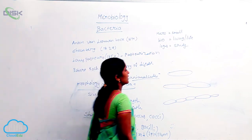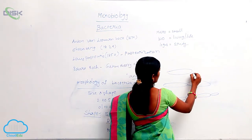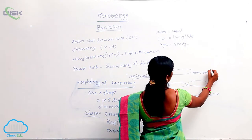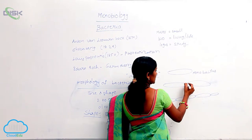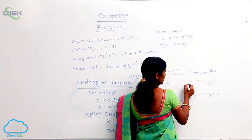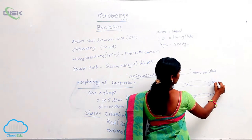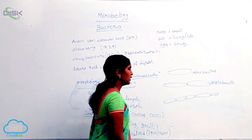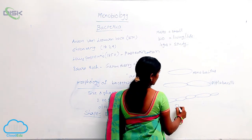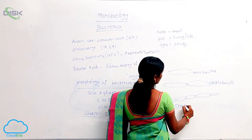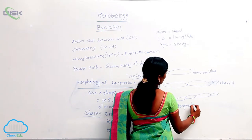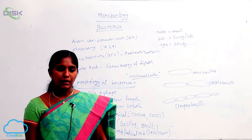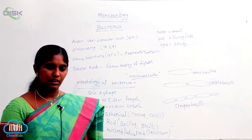The bacillus forms, if they are singular, they are called monobacillus. If two bacillus individuals are present, they are diplobacilli, and many in number means it is streptobacilli. Like bacillus forms, different bacillus forms are appeared.